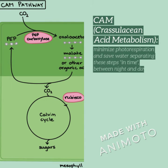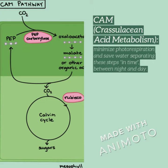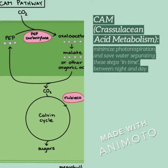Next we have the CAM plant, which stands for crystalline acid metabolism. These plants minimize photorespiration and save water by separating the steps in time — meaning it does so between night and day. In the picture, the night is on the top where it separates the CO2, and the day is on the bottom where it undergoes the Calvin cycle.